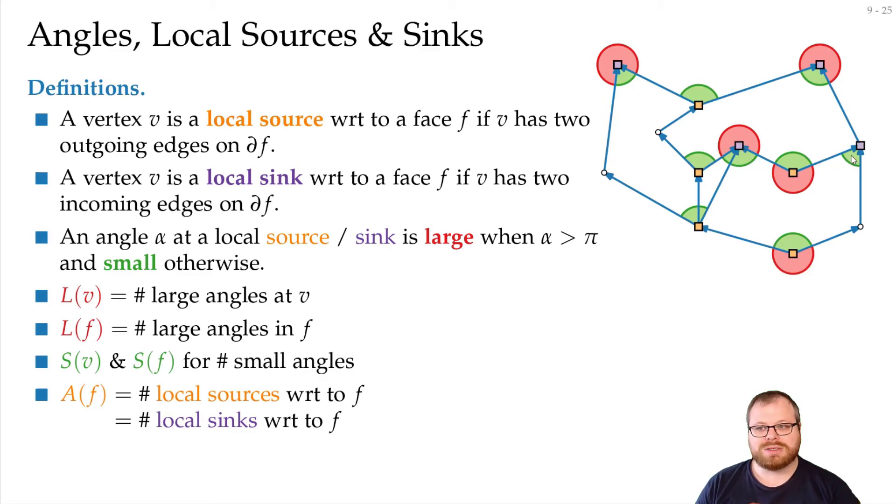And now, each of these local sources or sinks has either a small or a large angle in the face. So, the number of large angles plus the number of small angles is exactly the number of sources plus the number of sinks, or 2 times A(f).